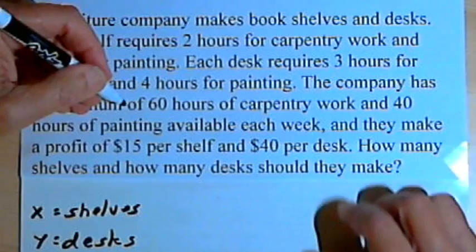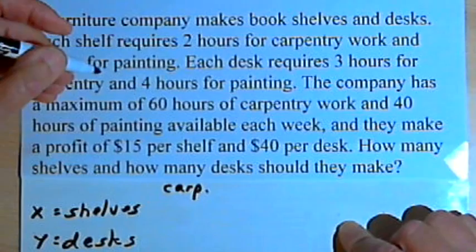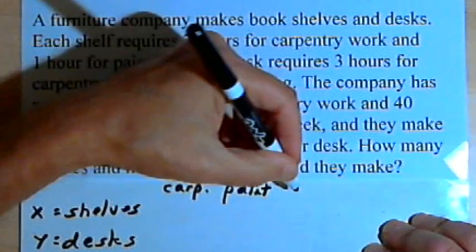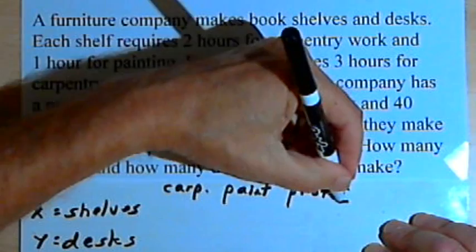They've got carpentry time that they've got to take into account, so I'm going to make a column for the carpentry time they use. And they've got painting, I'll make a column for painting. And they've got profit. Let's fill in the information now.